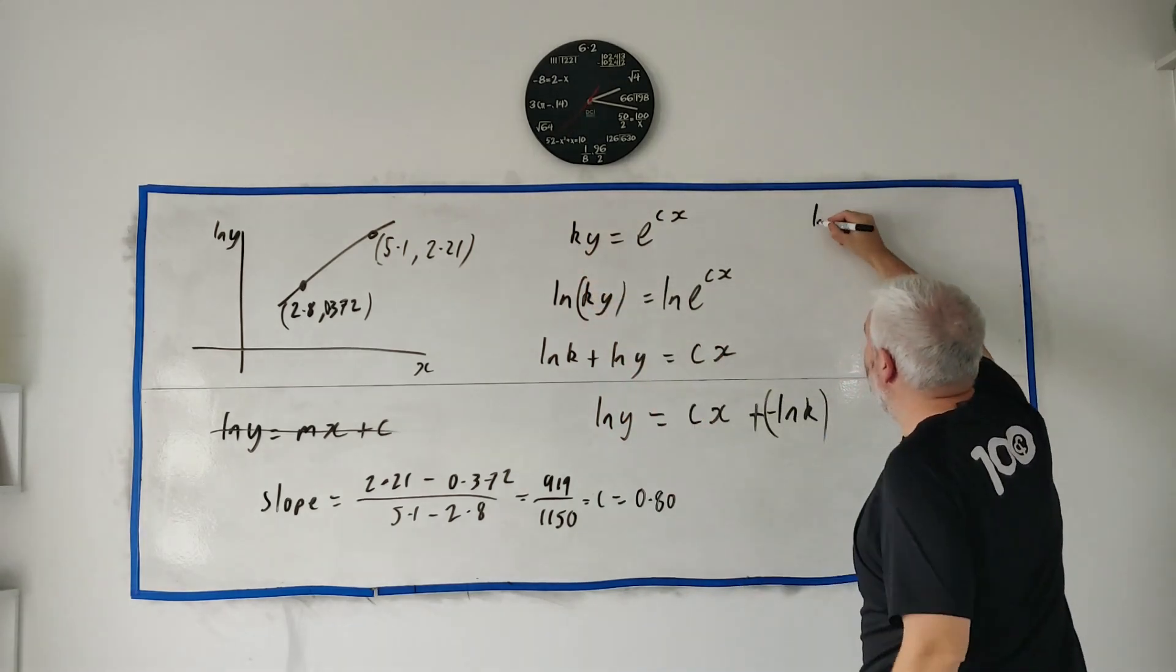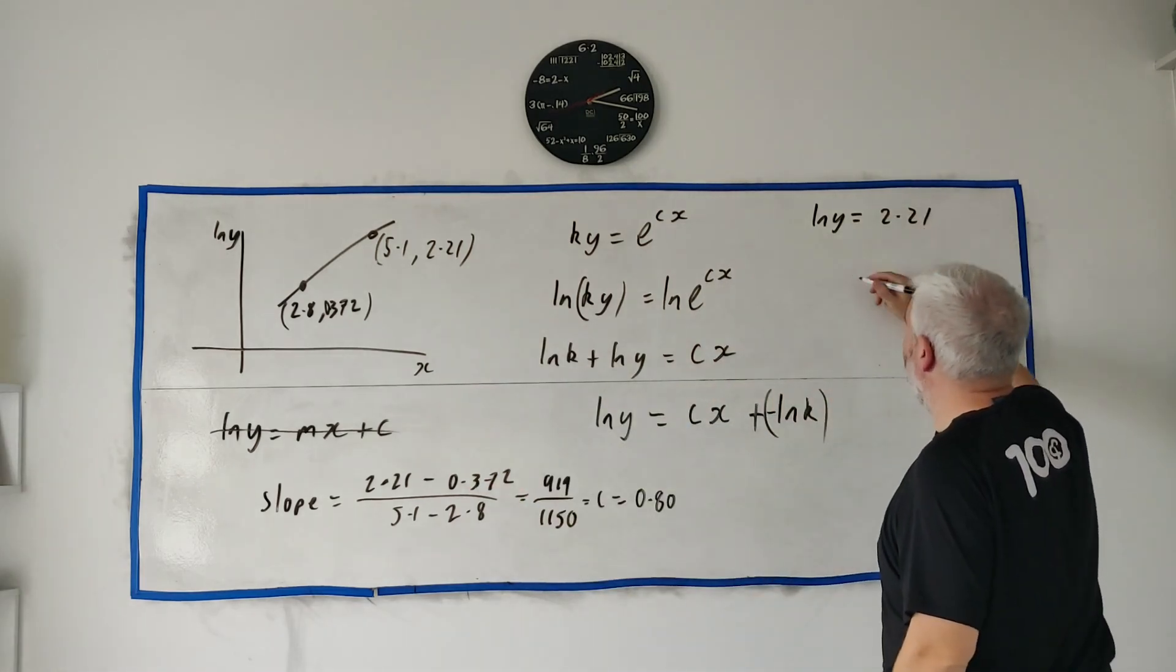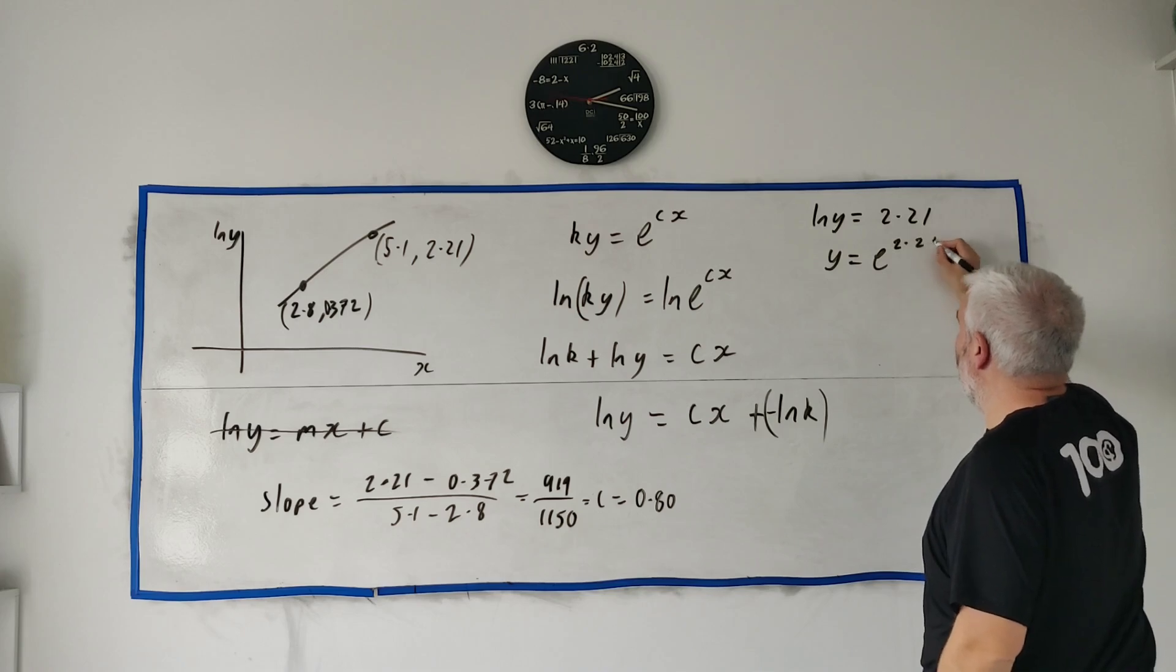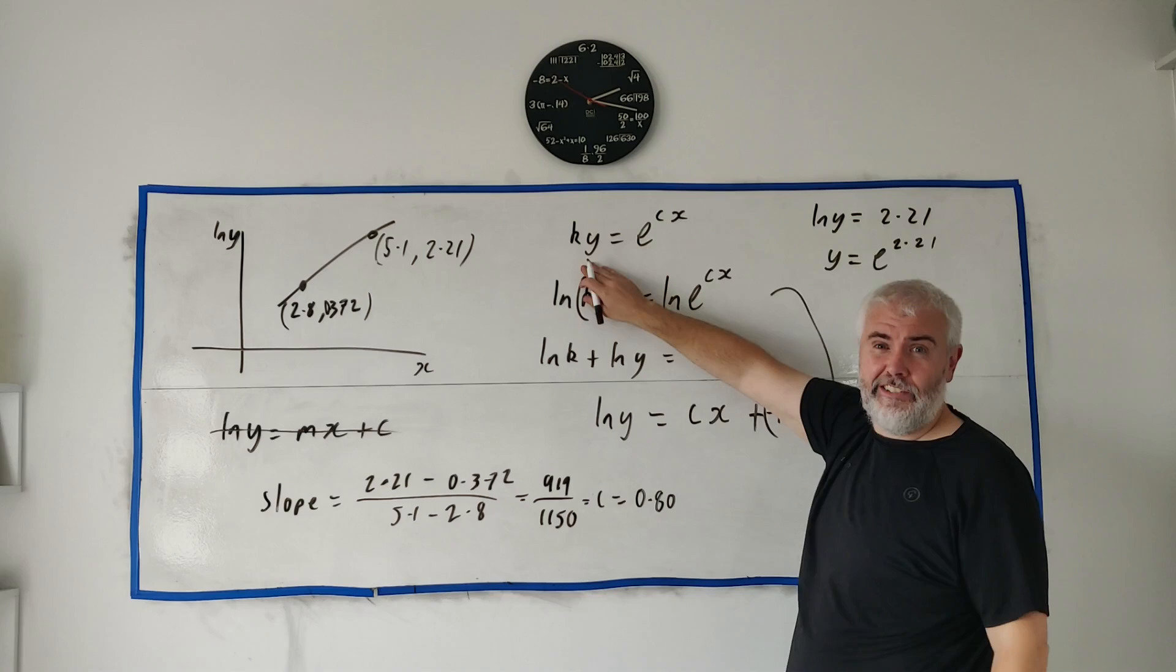Natural log of y is, let's say this one here, 2.21. That means y must equal e to the power of 2.21. Now that I know what y is I can just use this equation to find k.